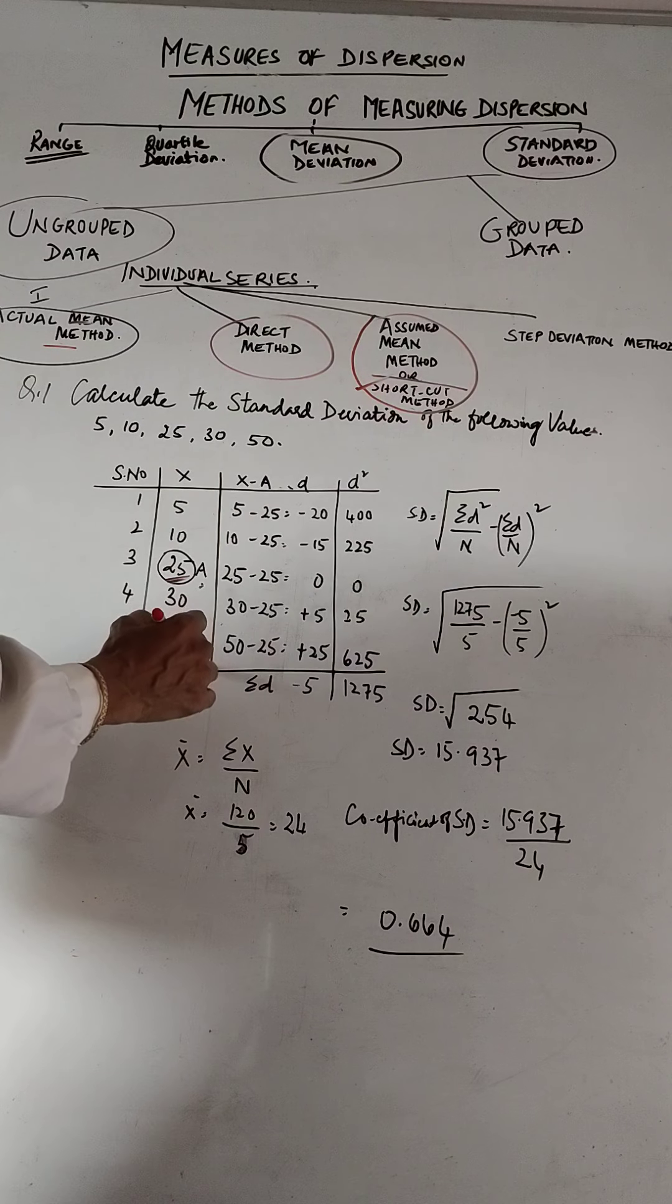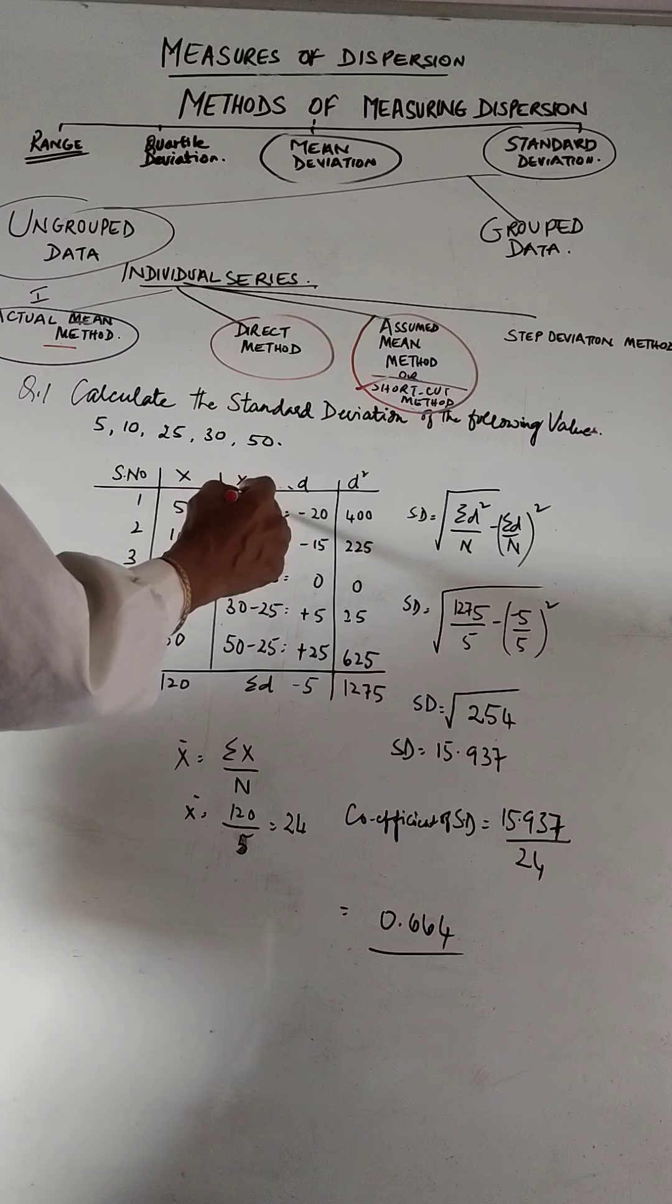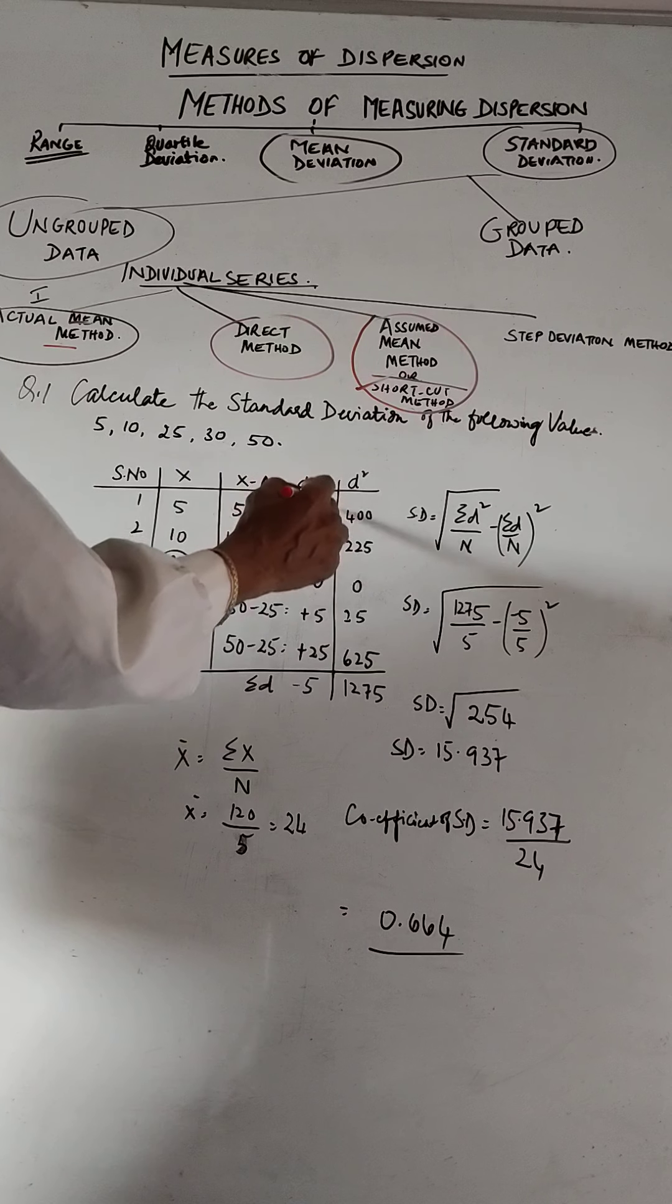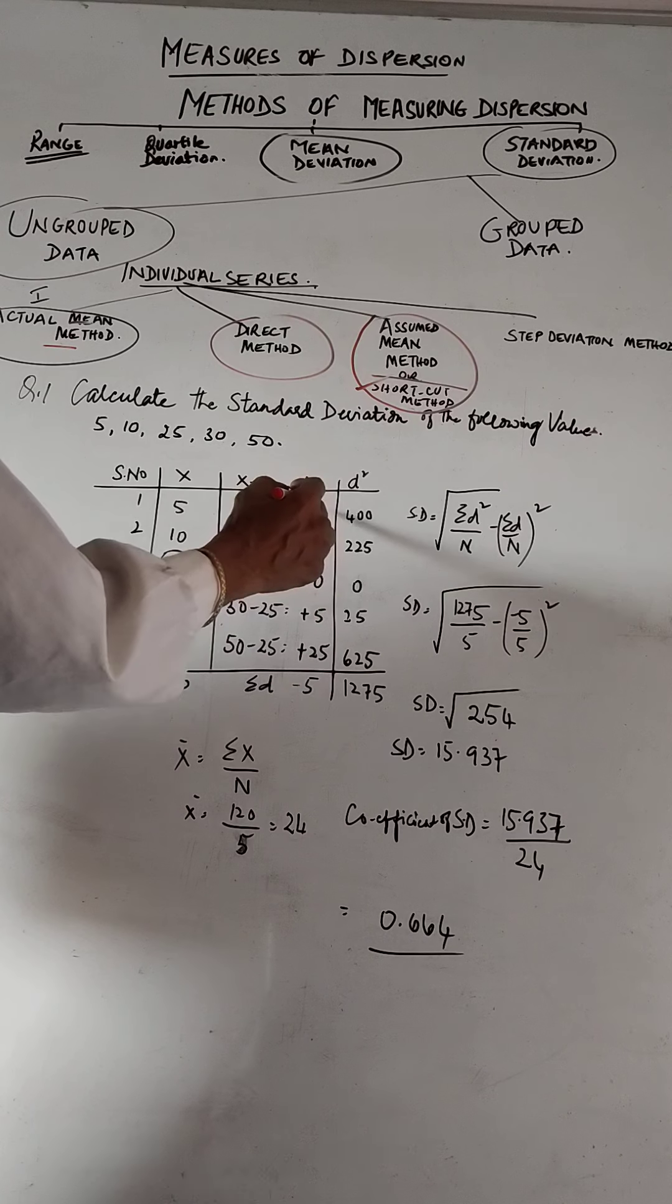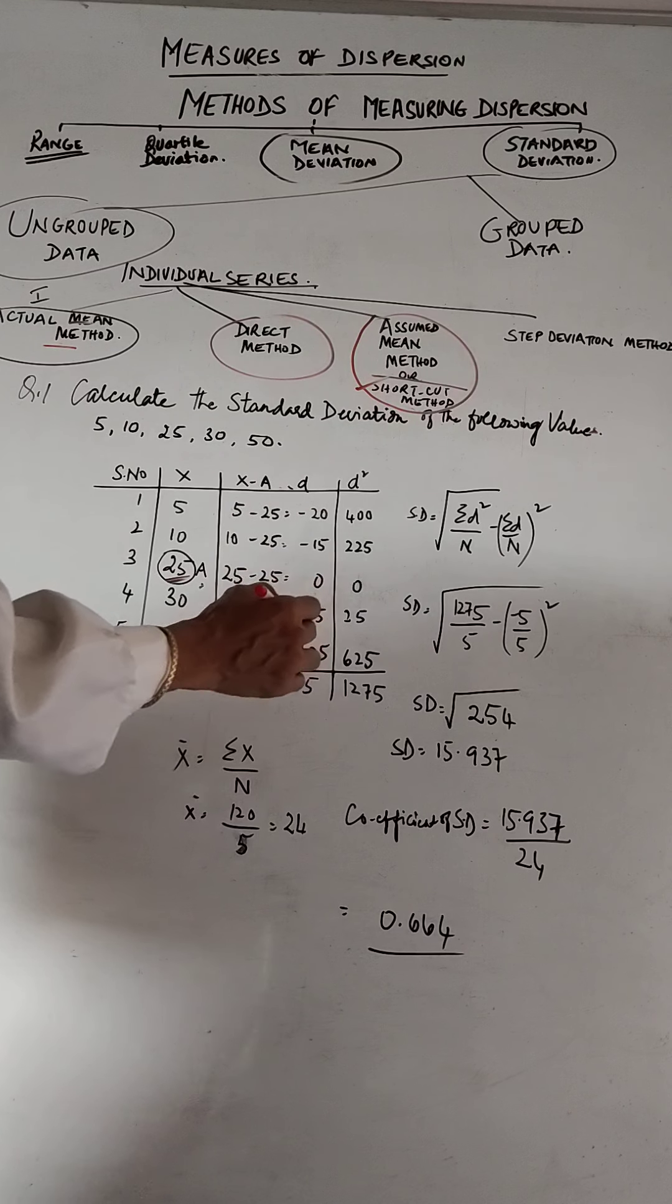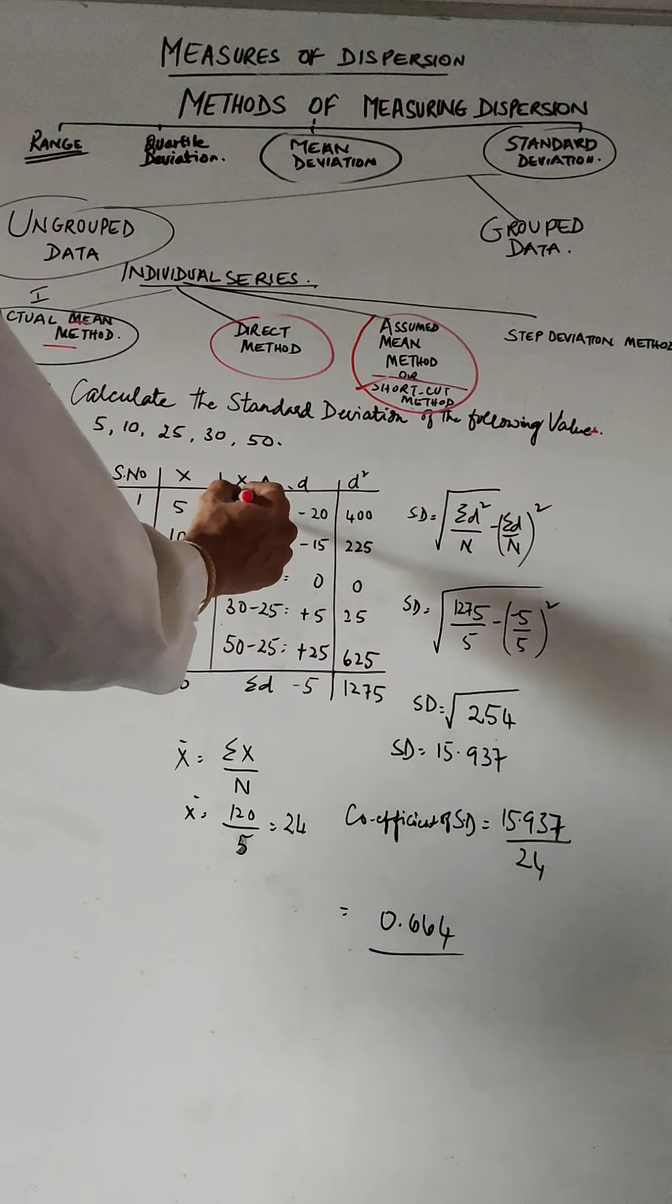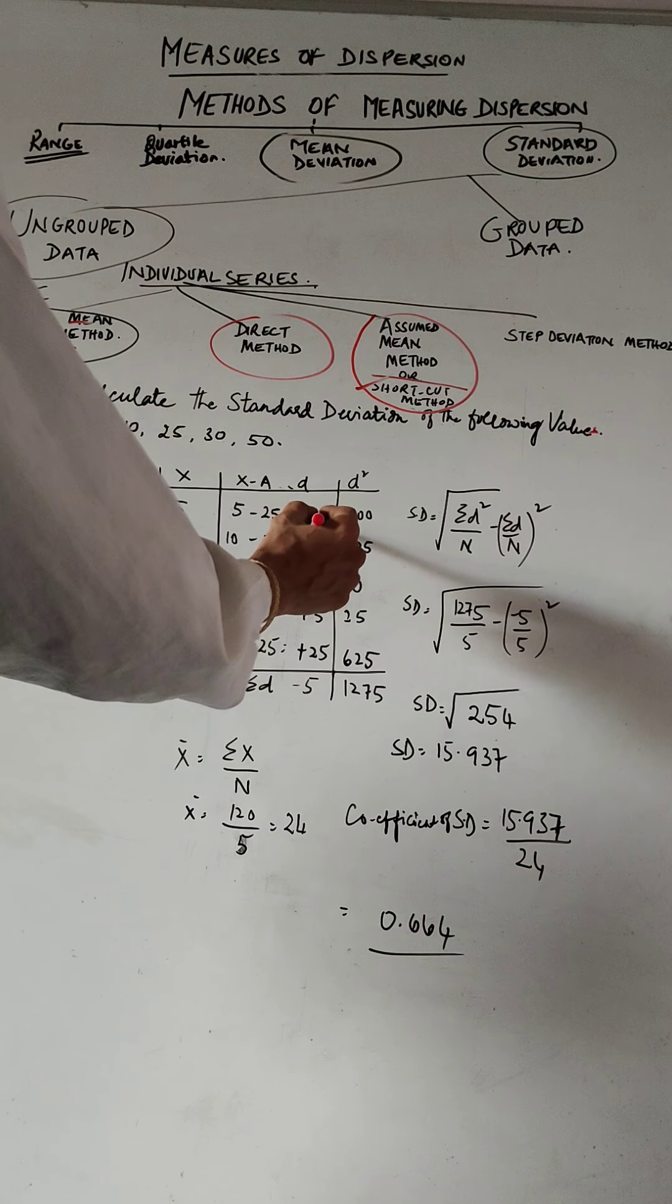From each variable, I minus the assumed mean, and what I get is a deviation. I don't ignore the plus and minus signs; I write them down.